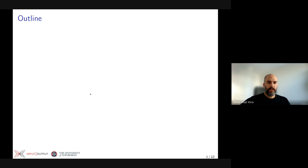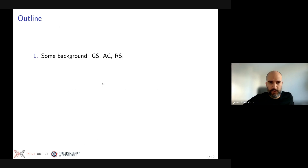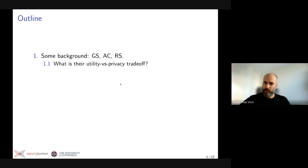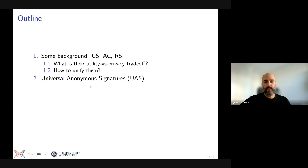The outline of the talk is roughly as follows. I'm going to start by giving some background on the main previous works upon which we build and try to generalize, namely group signatures, anonymous credentials, and ring signatures. I will describe their utility versus privacy trade-off, and then describe our proposal, which we call Universal Anonymous Signatures or UAS.